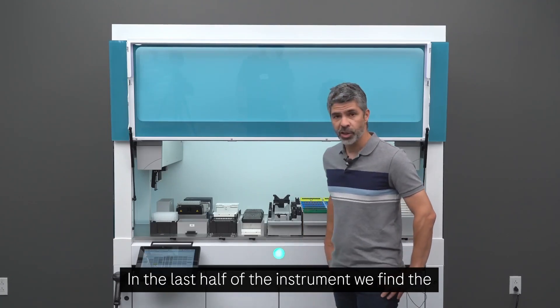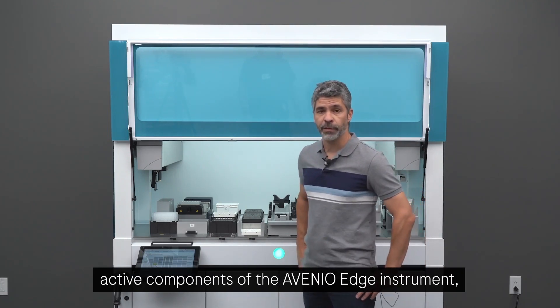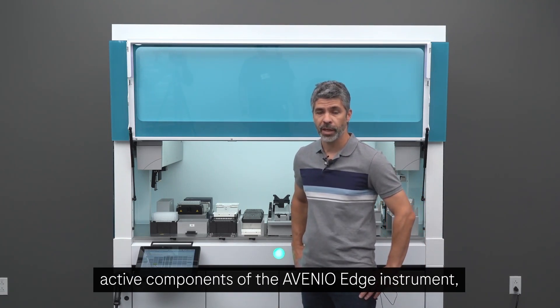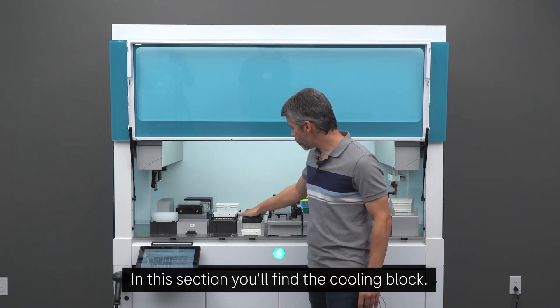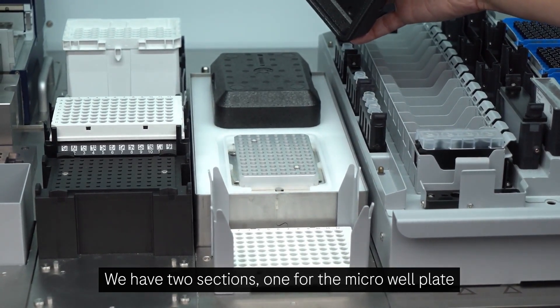In the last half of the instrument, we find the active components of the Avino Edge instrument where most of the process is performed. In this section, you'll find the cooling block. We have two sections.